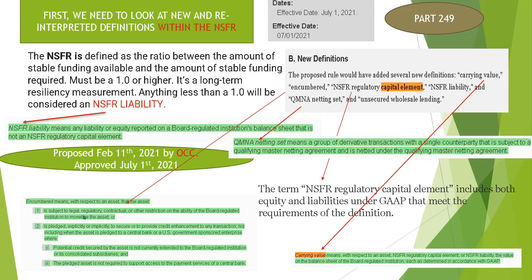Another new definition is encumbered, which means with respect to an asset that the asset is subject to legal, regulatory, contractual, or other restriction on the ability of the board-regulated institution to monetize the asset, or it is pledged explicitly or implicitly to secure or to provide credit enhancement to any transaction — not including when the asset is pledged to a central bank or a U.S. government-sponsored enterprise where potential credit secured by the asset is not currently extended to the board-regulated institution or its consolidated subsidiaries.